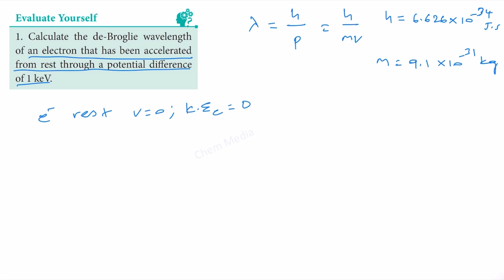Since the electron is at rest, its kinetic energy is equal to zero. Now after we apply the potential difference, the electron moves, so it gets some velocity that we need to find out. This means that now it has kinetic energy, because any moving object with mass should have kinetic energy.